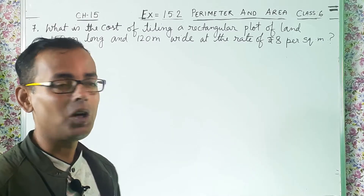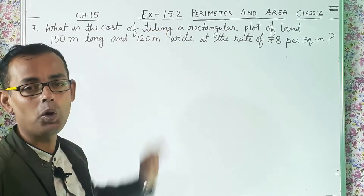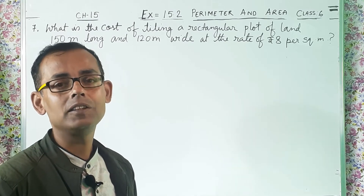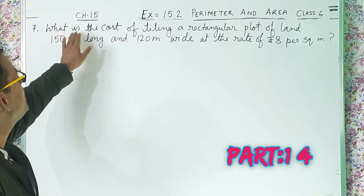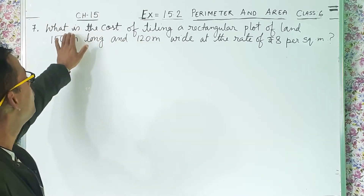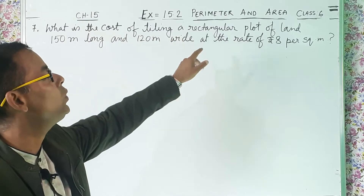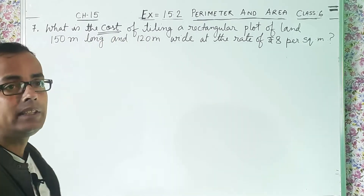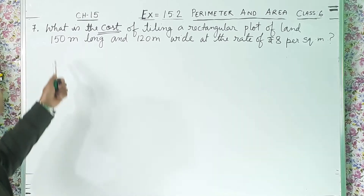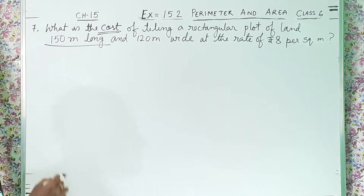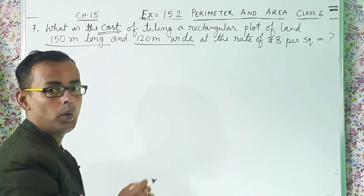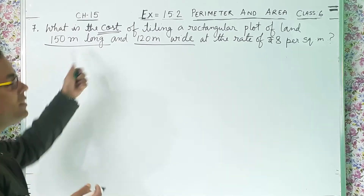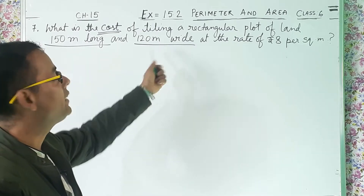Let us solve question number 7 of exercise 15.2. This is a continuation class and today's part is part 14. Let us see what they have asked in the question: what is the cost of tiling a rectangular plot of land, 150 meter long and 120 meter wide? Wide means width and width means breadth, so length and breadth are both given to us.